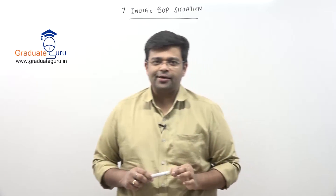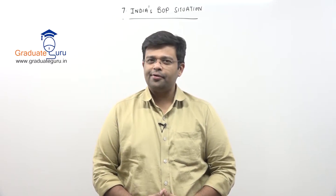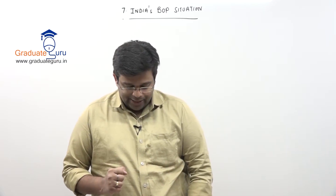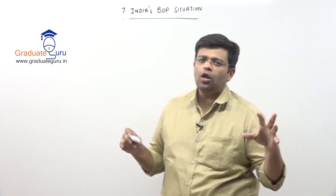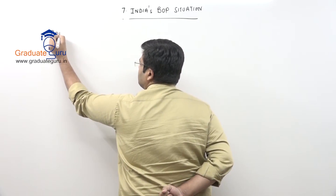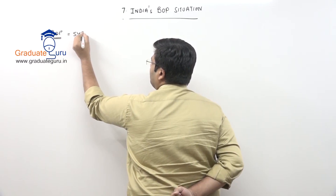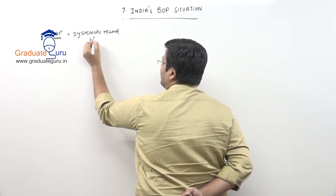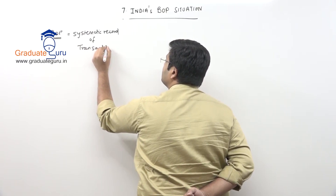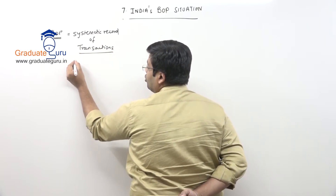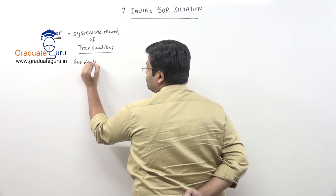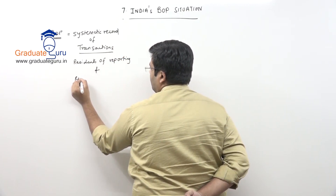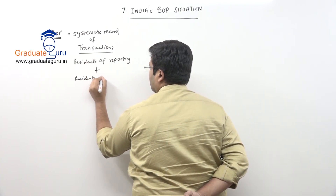As is the limitation of our textbooks, we do not study the latest data — we might study data which is one or two years old. Now let us recall what exactly BOP is. The first concept we studied is that BOP is a systematic record of transactions that take place between residents of the reporting country and residents of foreign countries.